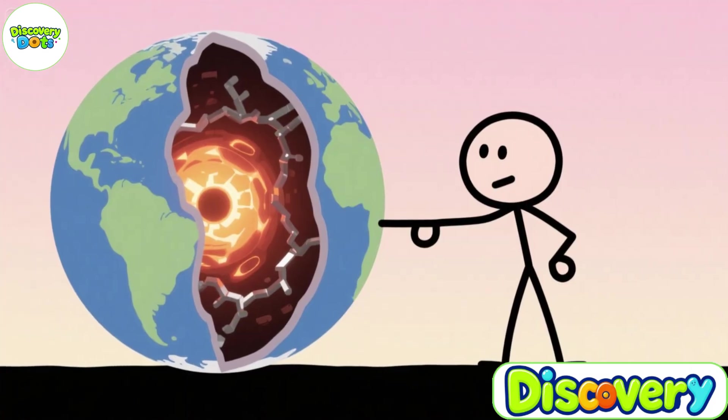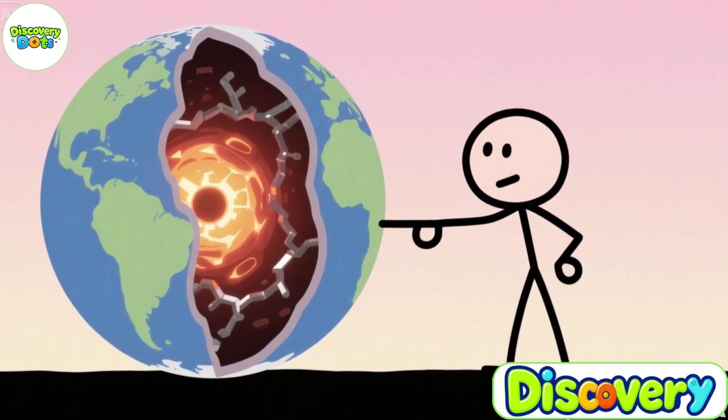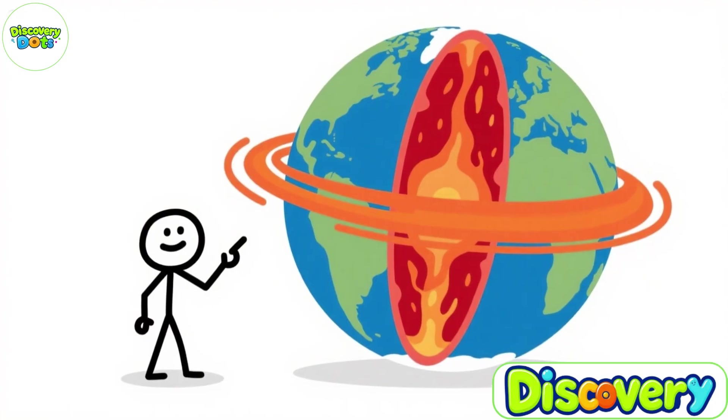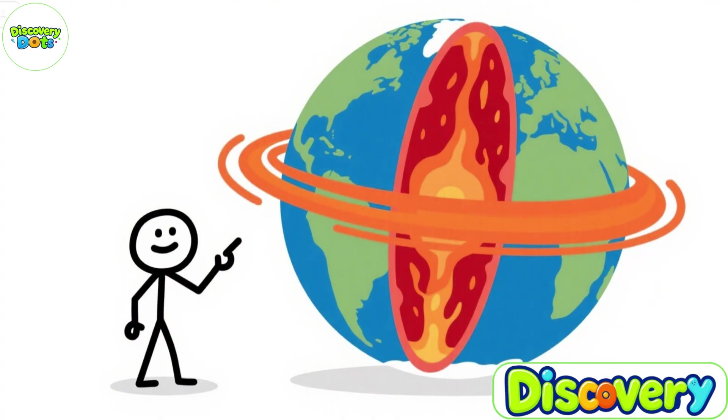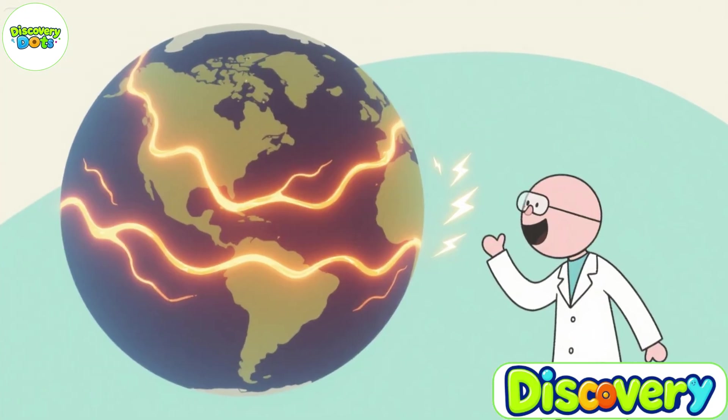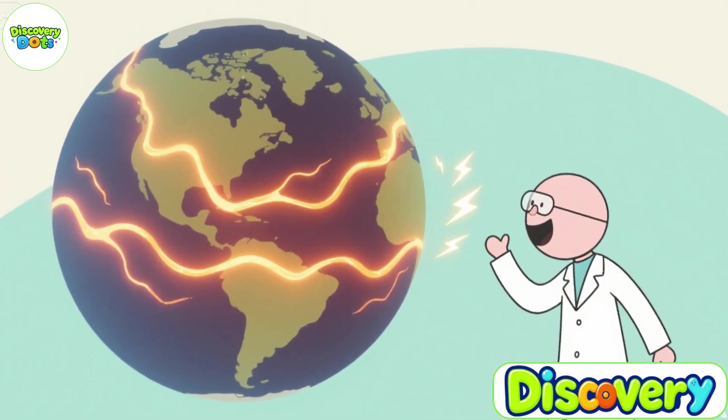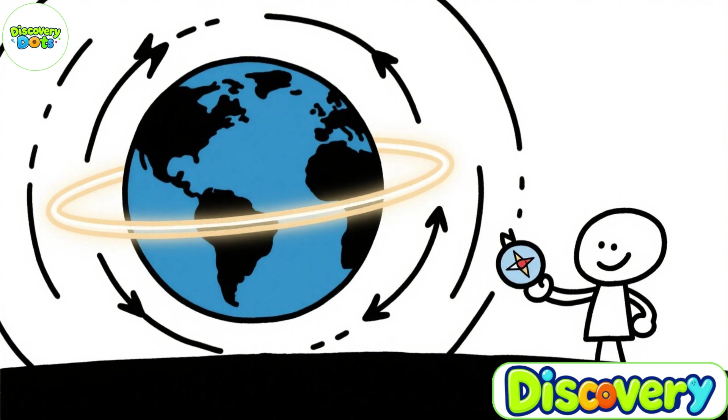Few people realize that our planet Earth acts like a giant magnet. This happens thanks to Earth's core, which contains a vast amount of iron and nickel. In the outer core, these metals exist in molten form and are constantly moving. As this molten metal flows, it creates electric currents. And these electric currents, in turn, generate what we call Earth's magnetic field.